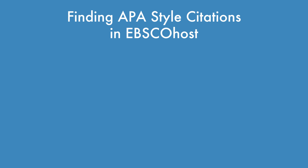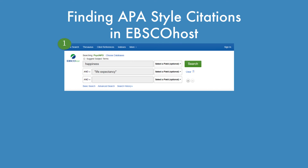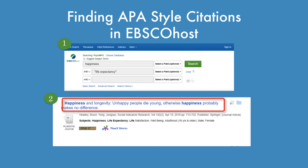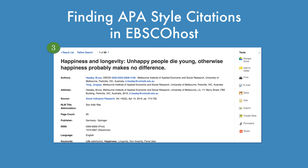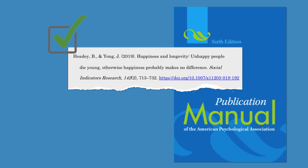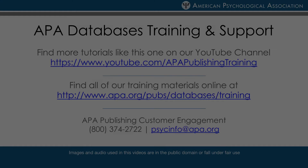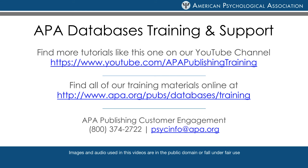So that's it! Accessing APA-style citations in EBSCOhost is as easy as conducting a search, clicking on the title of the results, and then clicking on the Cite button on the left-hand side of the screen. Once you check the citation against your style manual, you're good to go! Thank you for watching! For more tips and strategies, please see our YouTube channel or visit the APA website. Thank you!